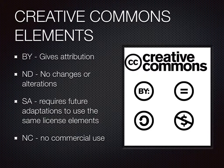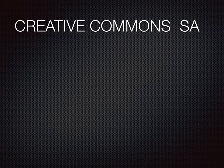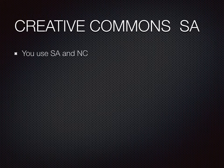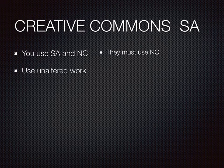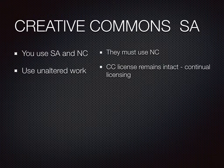Of these four, the Share Alike element is usually the most confusing. The SA license indicates that the person who uses your work must license their use of your work in the same way that you do. So if your license includes Share Alike and also the Non-Commercial element, their license must use the Non-Commercial element as well. You would use the Share Alike element only if you allow others to alter your work. If they use your work unaltered — simply sharing it as is — then your license stays intact with the work. You can force any use to be unaltered by using the No Derivatives element.